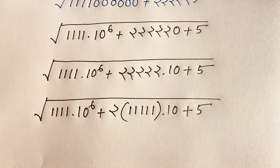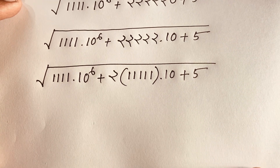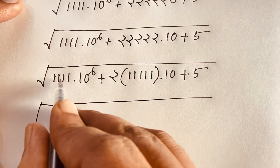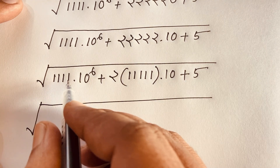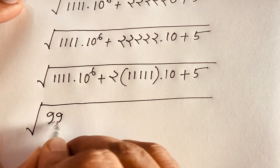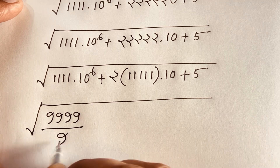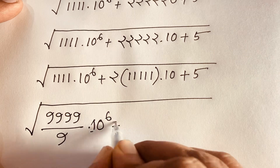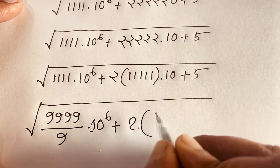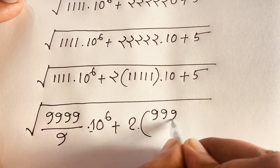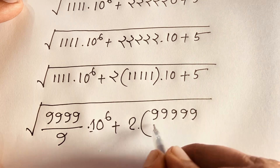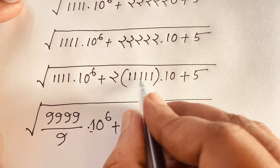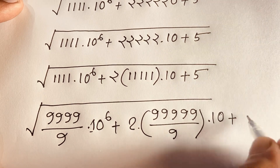Now again under the square root, I can see 1111 becomes 999999 divided by 9, times 10 to the power 6, plus 2 times — and in this expression again one, two, three, four, five — here is 55555 divided by 9. If I divide below by this we will find this value, times 10 plus 5.